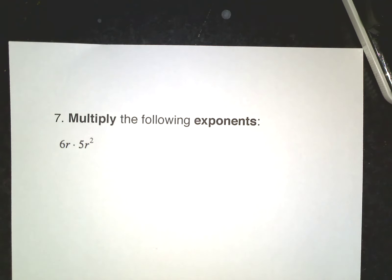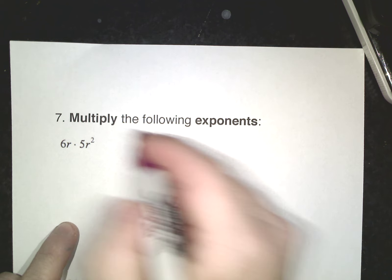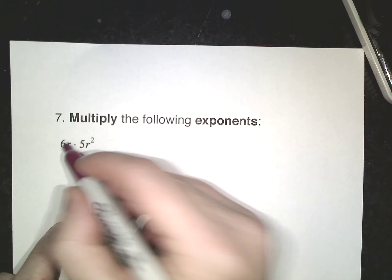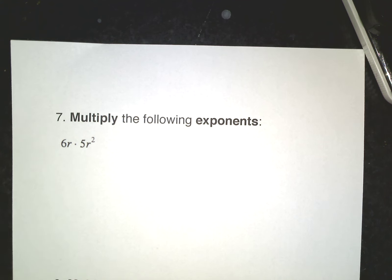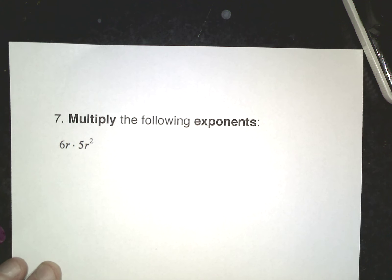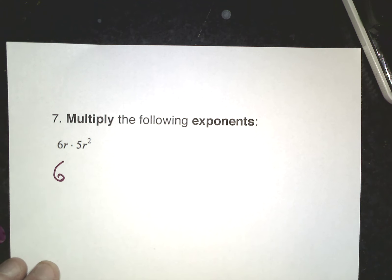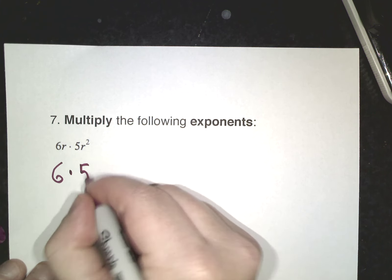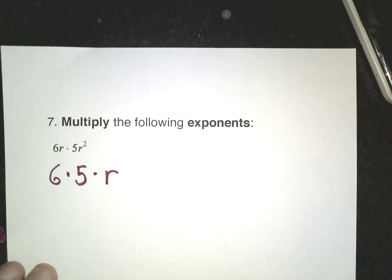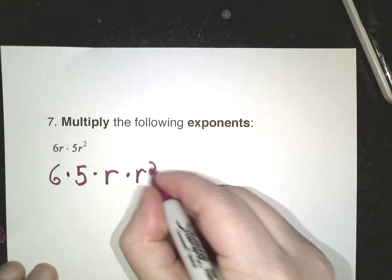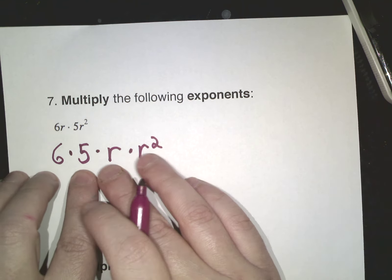Multiplying exponents. Now if you remember, the commutative property of multiplication says since this is really 6 times r times 5 times r squared, I can multiply this in any order I choose. For the purpose of this one, I'm going to change the order around. I'm going to move the numbers around. I'm going to say it's 6 times 5. Keep the numbers together. Times r times r squared. This makes it much easier on me. I'll deal with this half and I'll deal with this half.